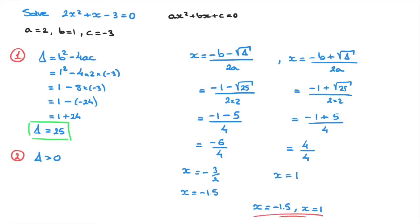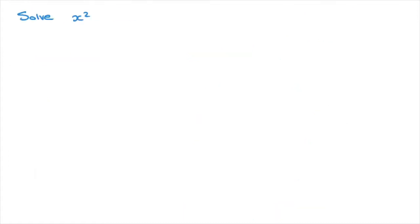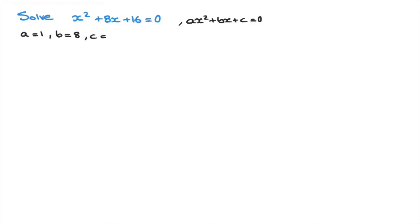That example showed us how to solve a quadratic equation for which the discriminant delta was positive. Let's move on to the second example, in which we'll see what happens when delta is equal to 0. Let's say we have to solve x squared plus 8x plus 16 equals to 0. This is a quadratic equation of the form ax squared plus bx plus c equals to 0, where a is equal to 1, b is equal to 8, and c is equal to 16.